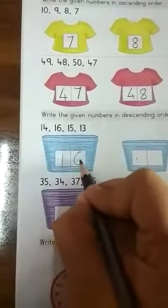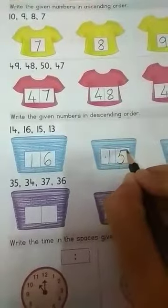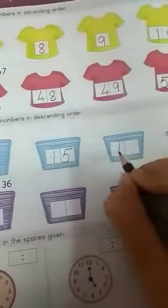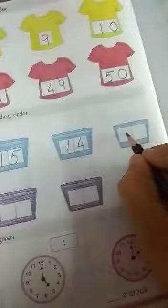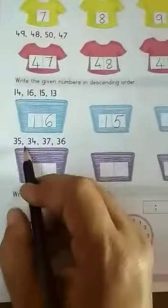Okay? So, see which one is the biggest one. 16 is the biggest one. Then comes 15, 15. Then 14, 14 and the smallest one is 13, 13.